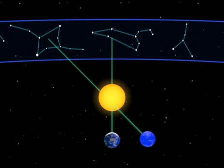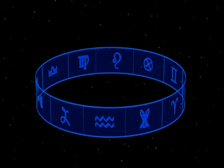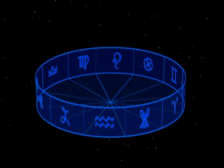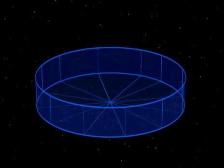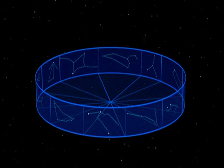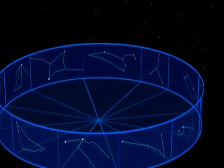We mustn't mix up the constellations with astrological signs. Astrologers divide the zodiac into 12 equal sectors of 30 degrees each, while the constellations, patterns of stars, are of very different sizes. Leo covers an angle of 35 degrees, while Cancer is only 9 degrees wide.